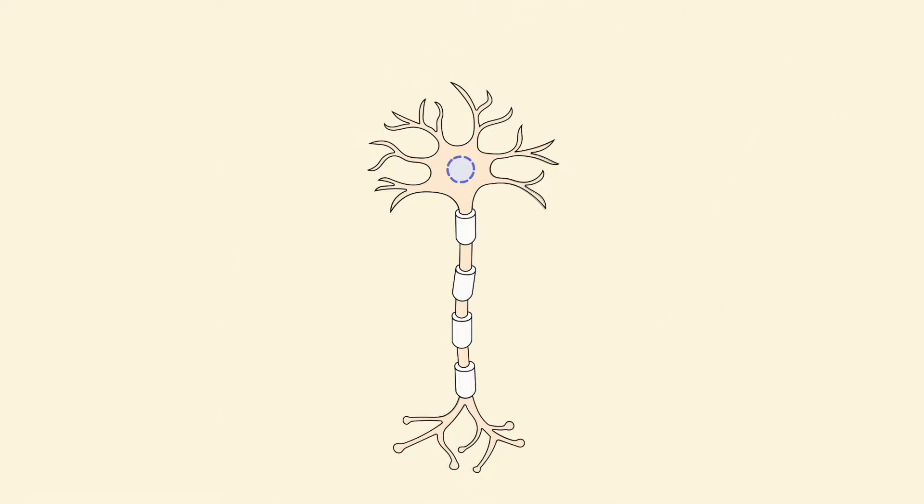To get us started on how our knowledge of the cortex came about, I want to first consider some of the different staining techniques that have been developed over time to visualize neurons. In the field of neuroscience, two of the most historically notable staining techniques are the Nissel stain and the Weigert stain.